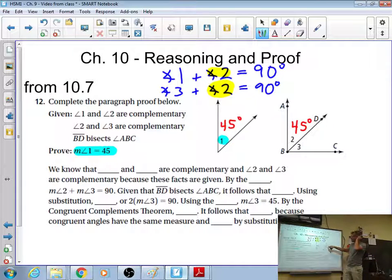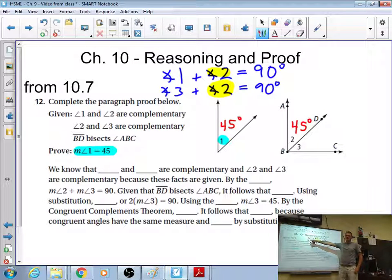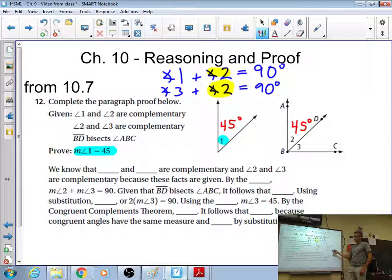Now, if I know that angle 2 is now 45, and its complement is angle 3, what's angle 3? 45. It's all 45. So, they're all 45-degree angles.